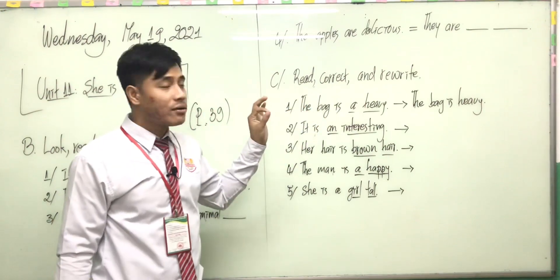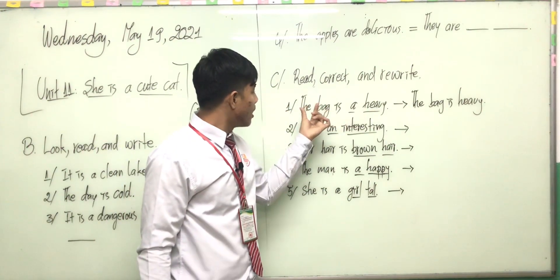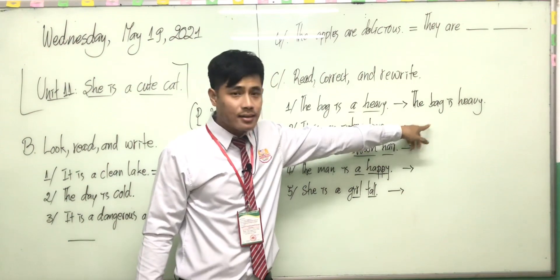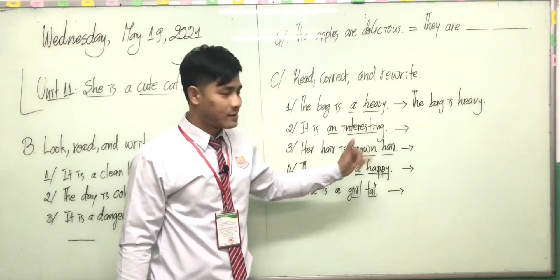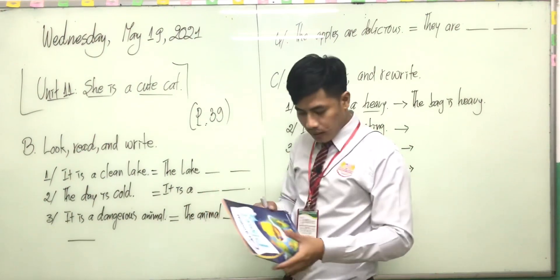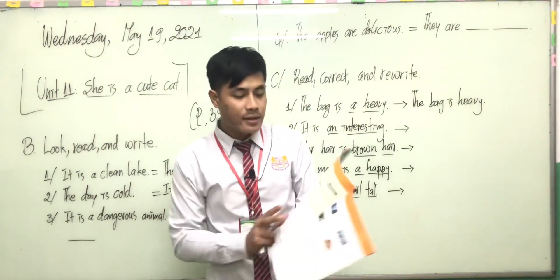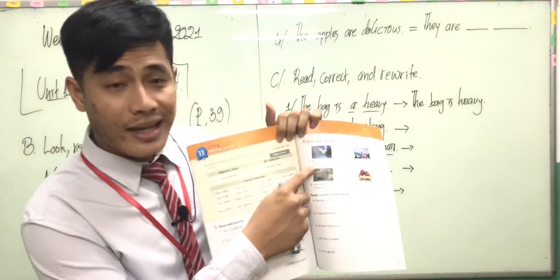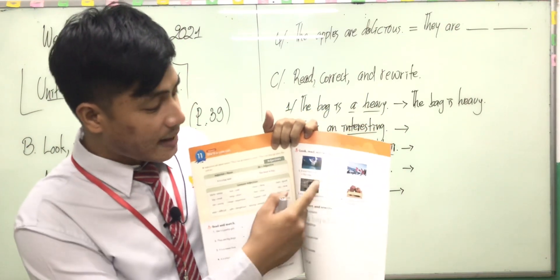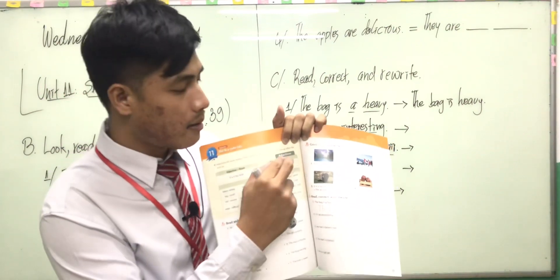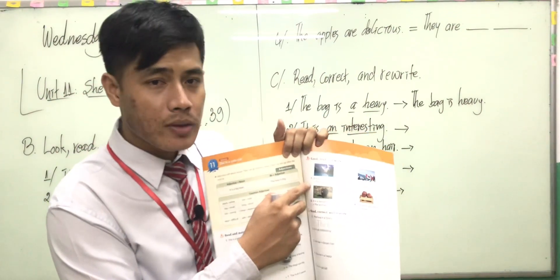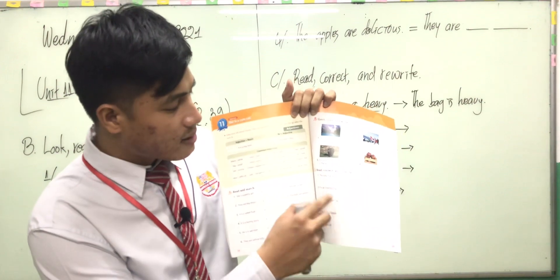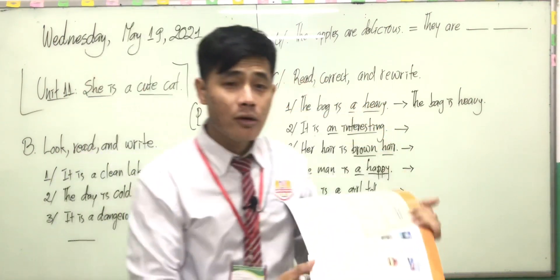Part C is read, circle and rewrite. The first one has been done for you, so read the sentence, then correct it and write the correct sentence. Look at this page — read the sentence below and write a sentence that means the same as the first sentence. For Part C, the first one has been done for you.